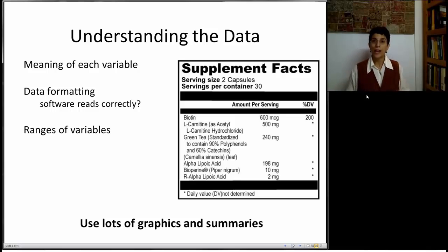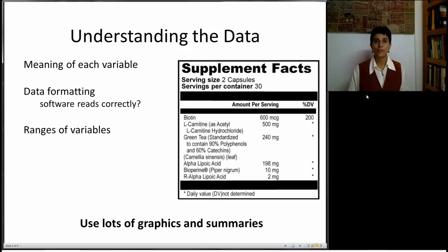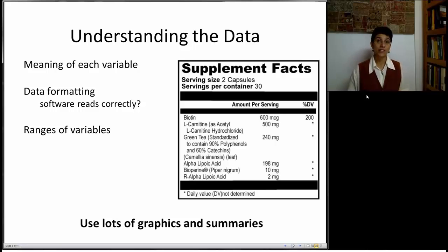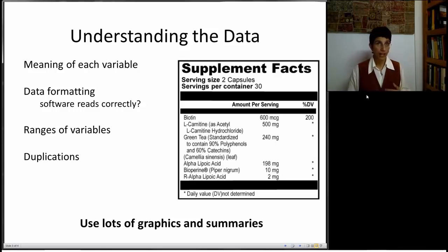Third, consider the range of variables. Maybe everyone has the same number in a column — in that case, that variable is not very interesting. Easy ways to determine variable ranges include generating a summary statistics table or looking at charts. Lots of interactive visualization can help you discover interesting and unexpected things. Duplications are another issue, especially when merging data from multiple sources — software can help detect some of these, but you'll have to be on the lookout.